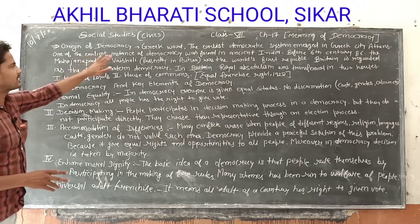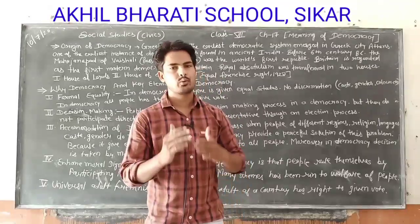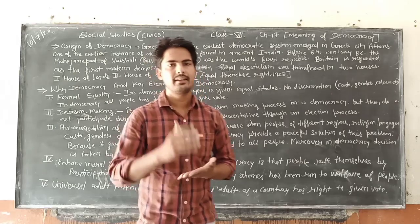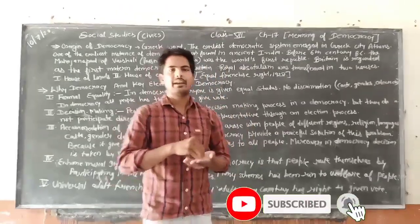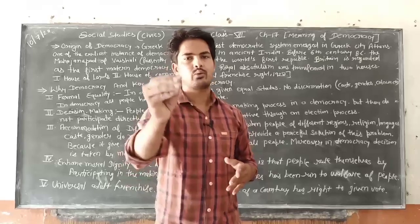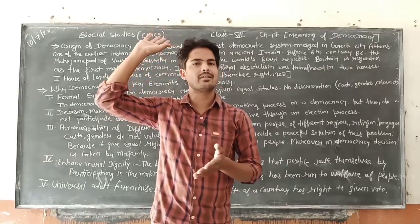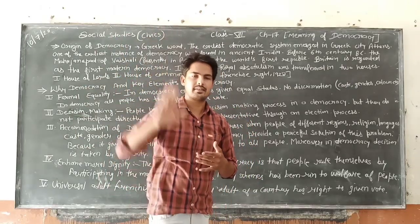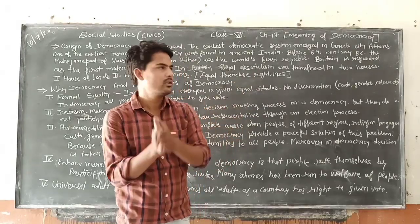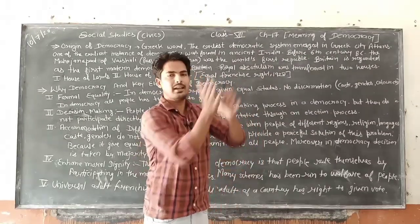One of the earliest instances of democracy was also found in ancient India. Prachin Bharat mein bhi kuch jagah democracy ke instances mile hain. Praachin samay mein — around 6th century BC — bharat mein bhi yeh democratic system dekhne ko mila. Before the 6th century BC, if we talk about India —